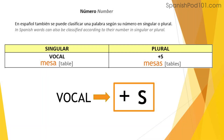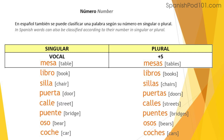So, how do we form the plural? Let's have a look at this table. If the word ends in a vowel — una vocal en español — then we're going to add an S at the end. So, like we said before: mesa becomes mesas, libro becomes libros, silla becomes sillas, puerta becomes puertas, calle becomes calles, puente becomes puentes, oso becomes osos, coche becomes coches, etc.